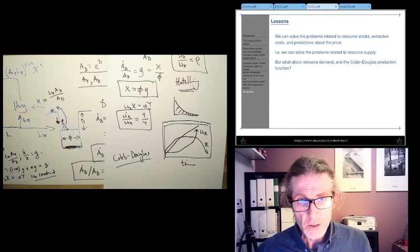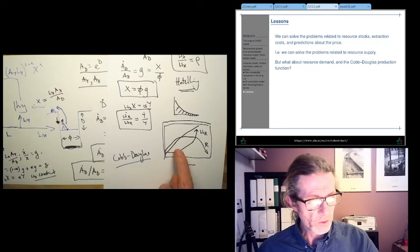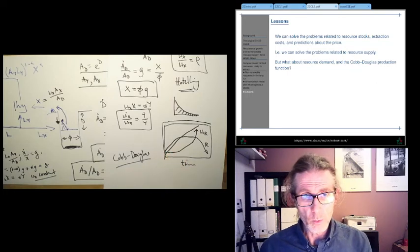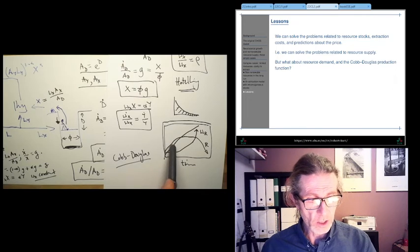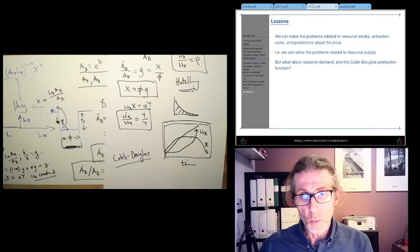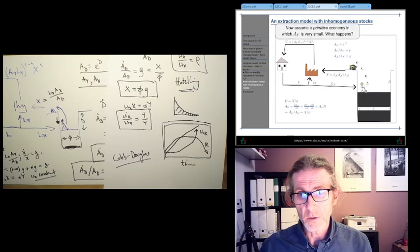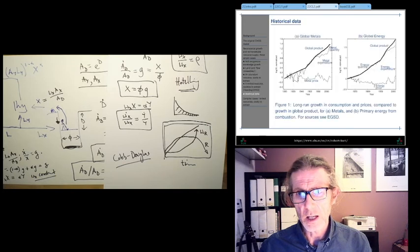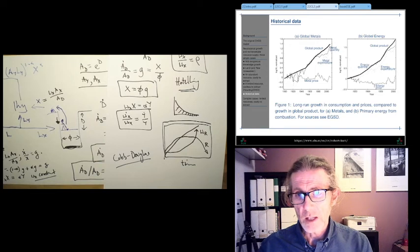Do we have any support for that? Of course, when we look at the data we see constant factor shares, which is what the Cobb-Douglas gives us. The factor share of metals is staying constant, and here the factor share of energy is more or less staying constant.